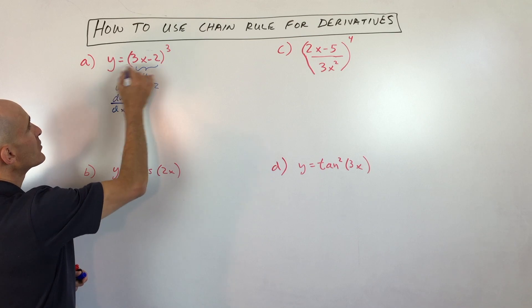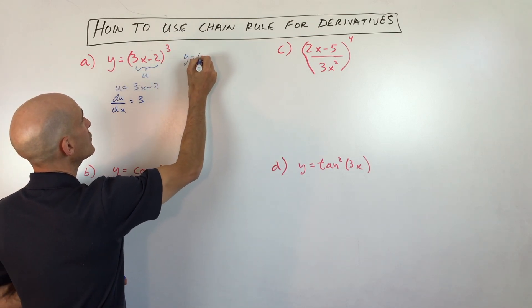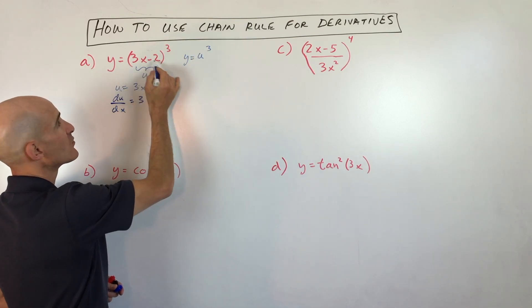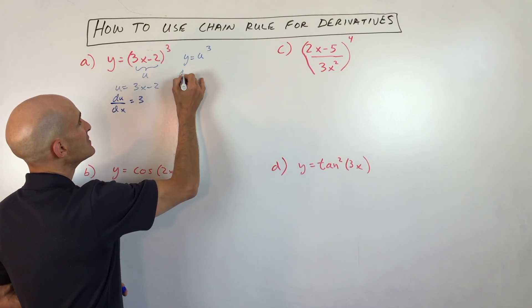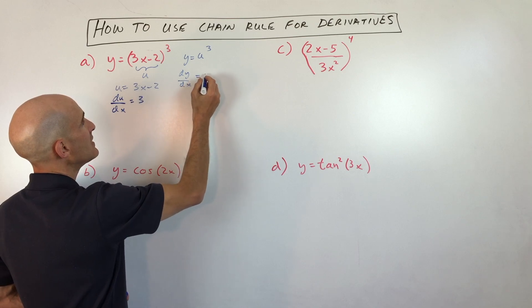Now the next thing I'm going to do is rewrite this. I'm going to write this as y equals u cubed. Because we replace 3x minus 2 with u, and I'm going to take the derivative now. So dy/dx equals, I'm sorry, dy/du.